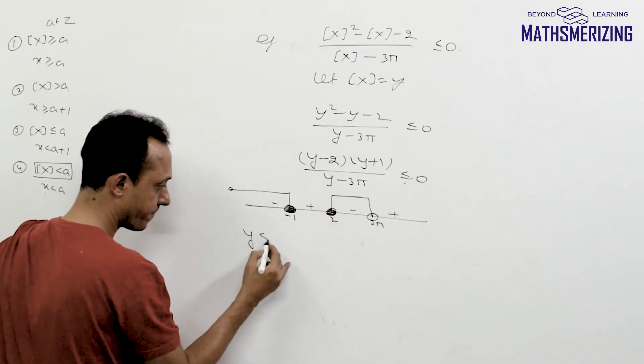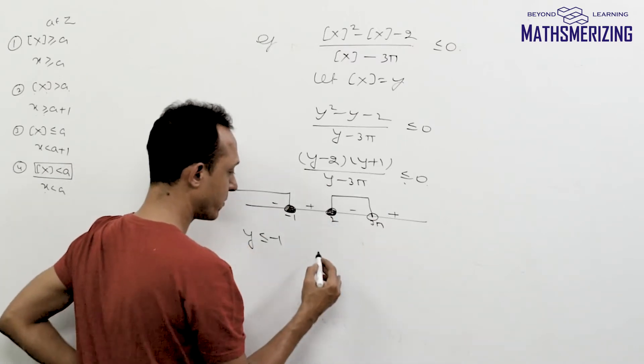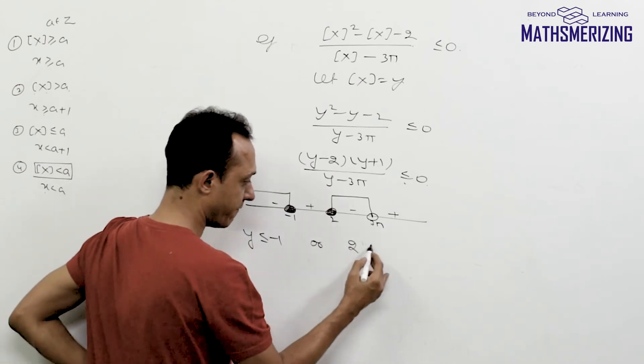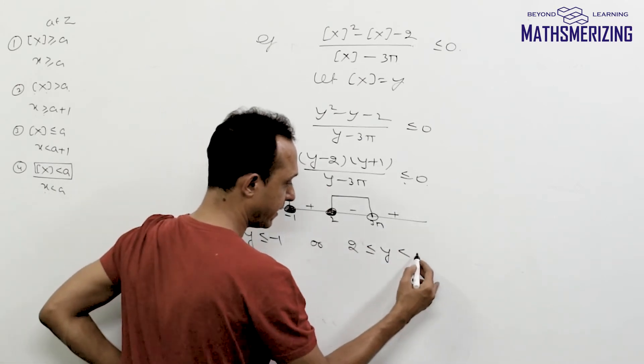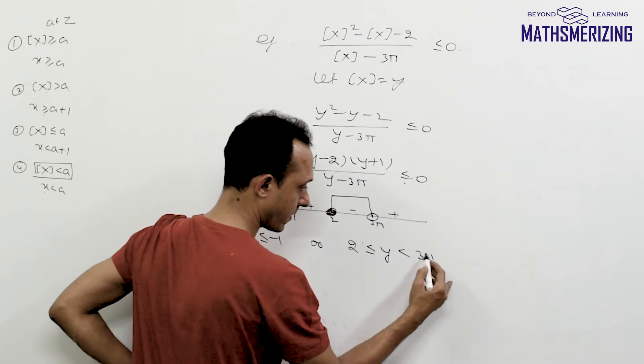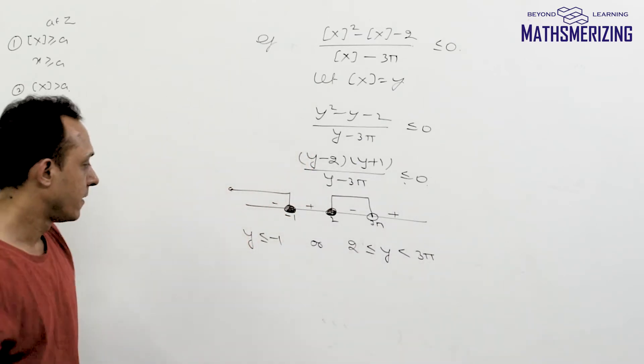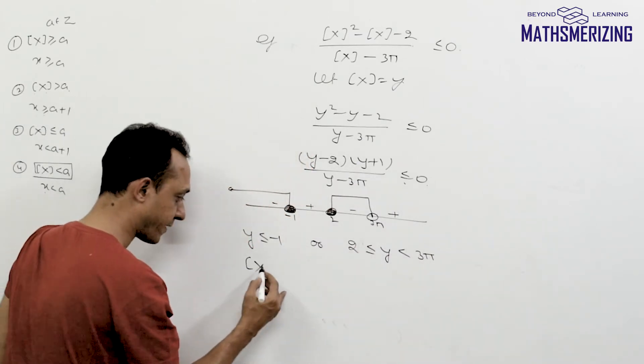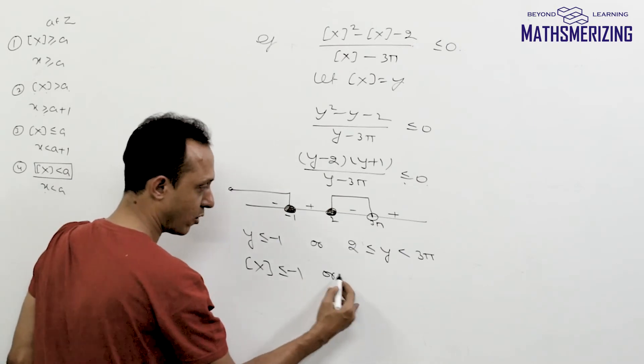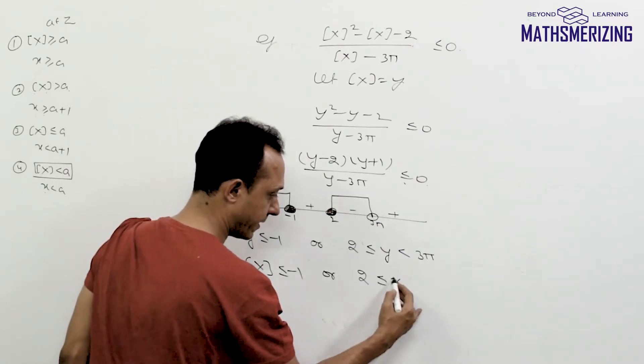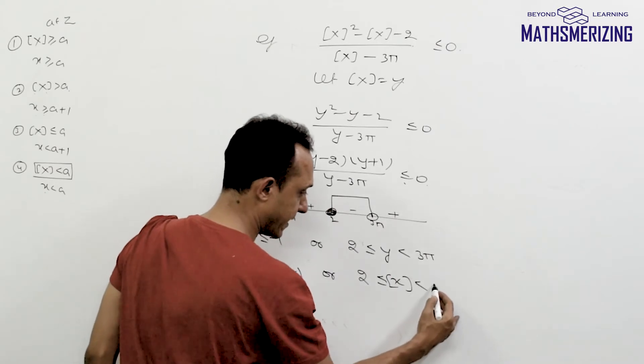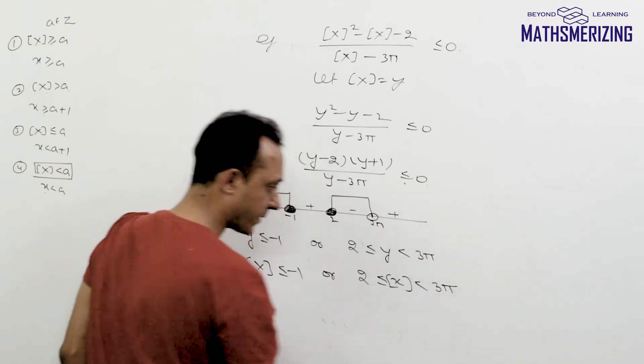So I'll simply write y is less than or equal to minus 1 or the value of y lies between 2 and 3π. So I can write greatest integer function of x is less than or equal to minus 1 or greatest integer function of x is less than 3π.